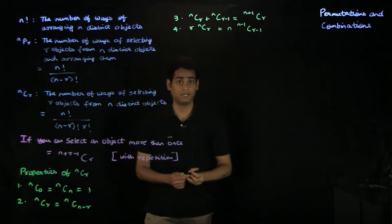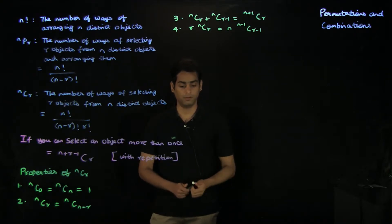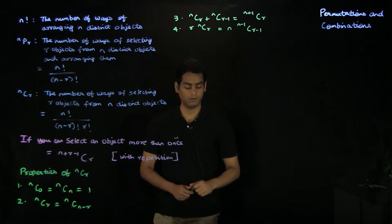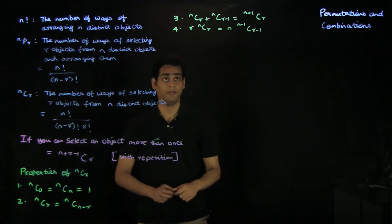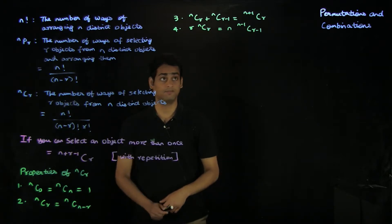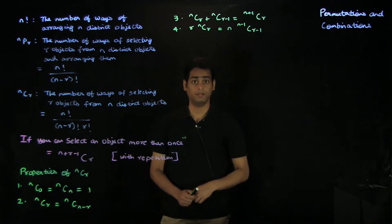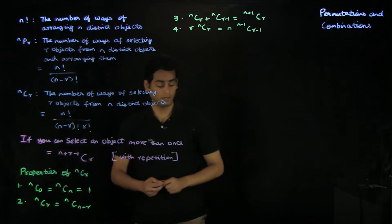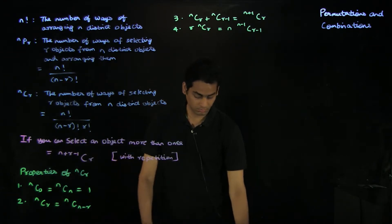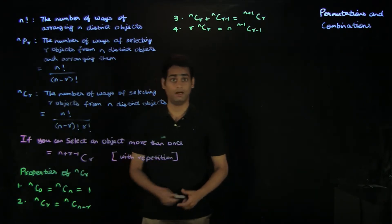These are some of the useful properties of nCr which will be useful time and again as we move on. We've already seen some of the applications of these properties in the binomial theorem chapter. So let's look at a few examples based on nCr.